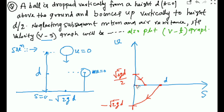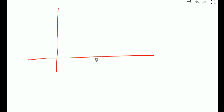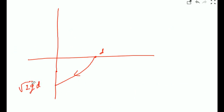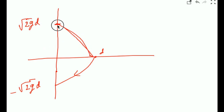As an alternative case, if the ball were given the exact same height d after rebound, then at the initial point velocity is 0, it strikes with −√(2gd), just after the strike velocity is +√(2gd), and at the highest point velocity is again 0. That gives a symmetric parabolic graph.